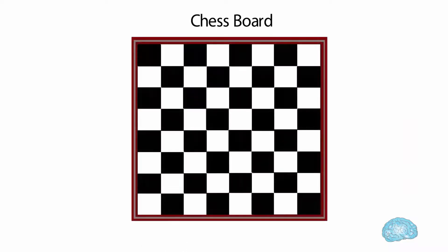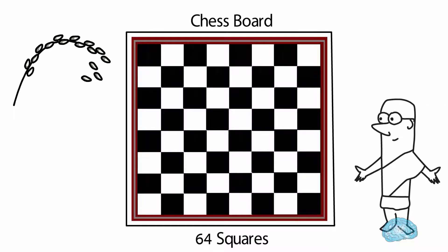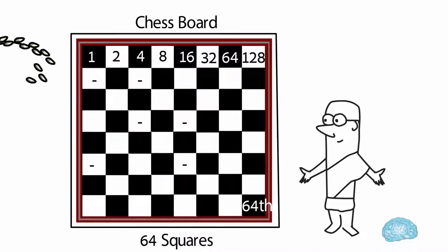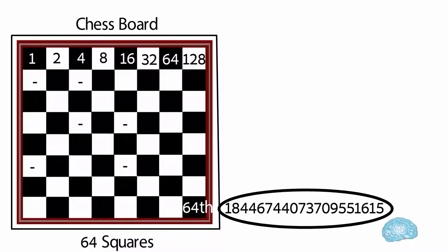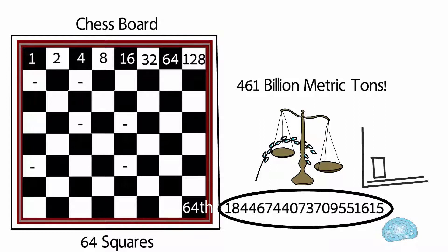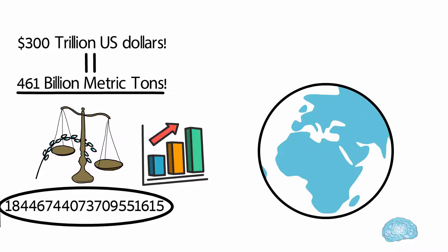Let me explain. This is a chess board. It has a total of 64 squares. So as this person requested, on the first square keep one grain of rice. On the next square, double that—it becomes two. Then double again—it becomes four, then eight, 16, and so on. Like this, keep doubling until the last 64th square. In the last square, the number of grains will be this much—I couldn't even say how much this is. But if we measure the weight of it, it is equivalent to 461 billion metric tons. In today's economy, this much rice value is equivalent to 300 trillion US dollars. This is almost equal to the entire wealth of the world.